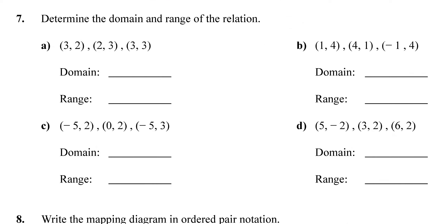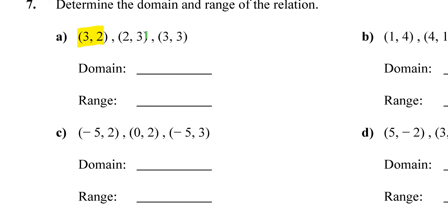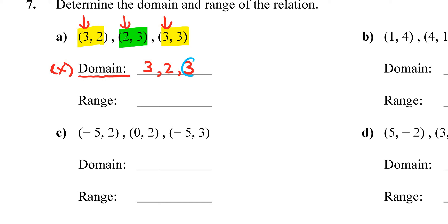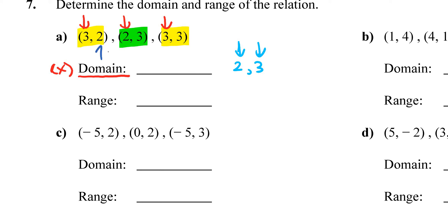For question 7, we're given three ordered pairs. The domain is the X values — the first number in each pair. I have a 3, a 2, and a 3. Since 3 repeats, the domain is just 2 comma 3. For the range, the Y values are 2, 3, and 3 — so the range is also 2 comma 3.